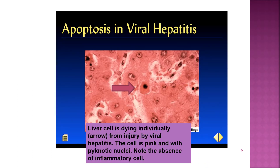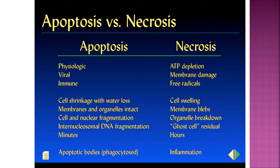This picture shows a liver cell that is dying from injury by viral hepatitis. Note that the cell is pink with apoptotic nuclei and there is an absence of inflammatory cells. This table shows the difference between apoptosis and necrosis.